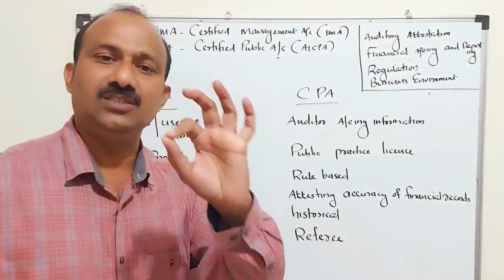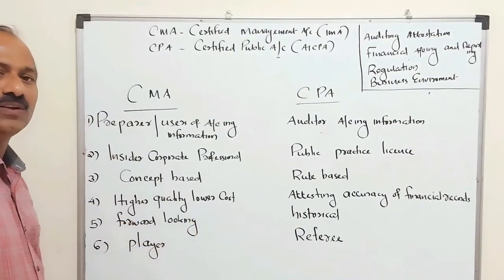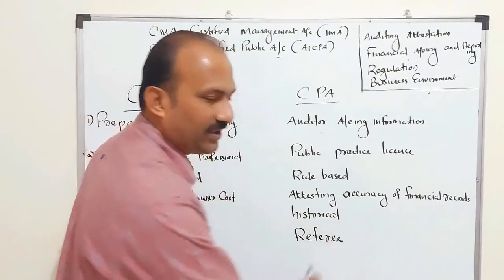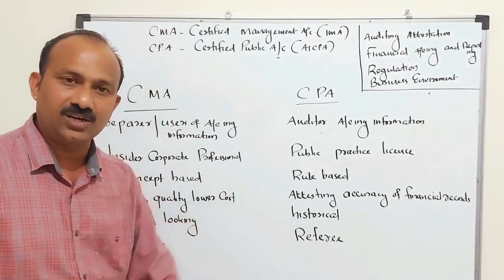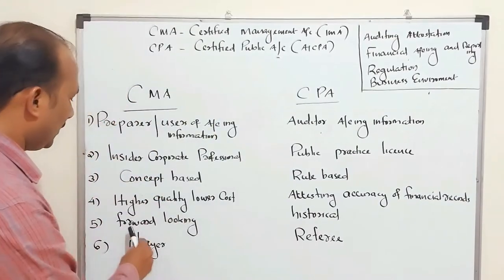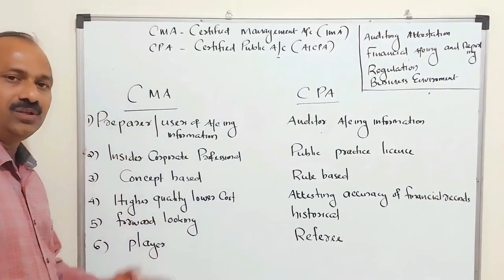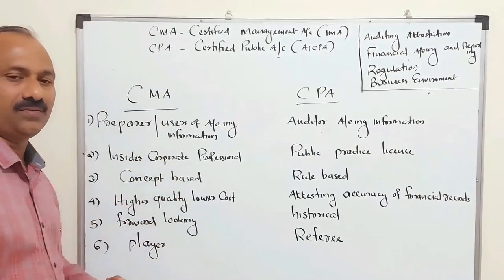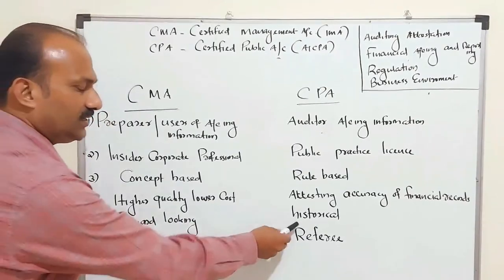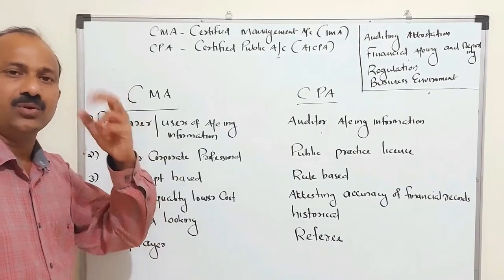CMA is concept-based — accounting work is done based on concepts — while CPA is rules-based, checking rules for each and every transaction. CMA focuses on higher quality and lower cost, while CPA focuses on attesting the accuracy of financial records. CMA people are forward-looking — doing financial planning for the future — while CPA people check historical information, verifying what the CMA people have done.